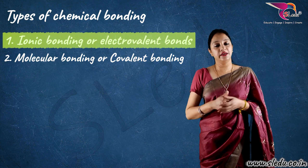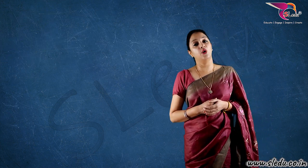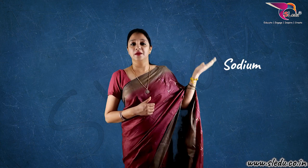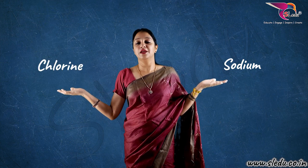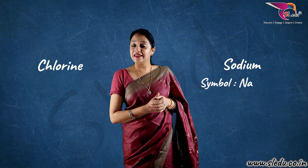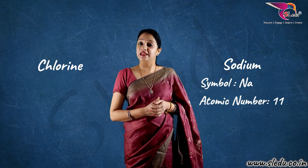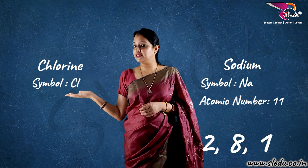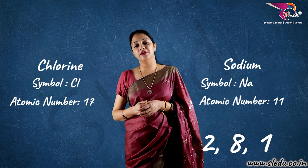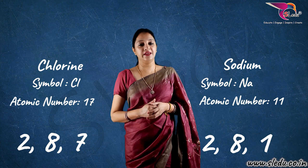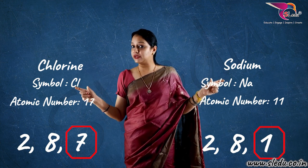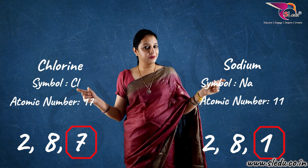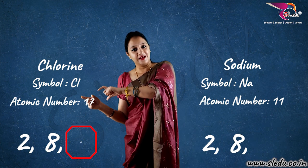Ionic bond — if any element wants to be stable, one of them will lose and one will gain. Let's recall — I just gave you two examples, of sodium and of chlorine. So, I am taking that example again. On this side I have sodium and on this side I have chlorine. Sodium, Na, symbol is Na, atomic number is eleven, and its electronic configuration is 2, 8, 1. Chlorine, on my left side, symbol is Cl, atomic number is seventeen, and its electronic configuration is 2, 8, 7. So, sodium has one extra electron in its last shell, and chlorine has one electron less. So, sodium will give its one electron to chlorine.